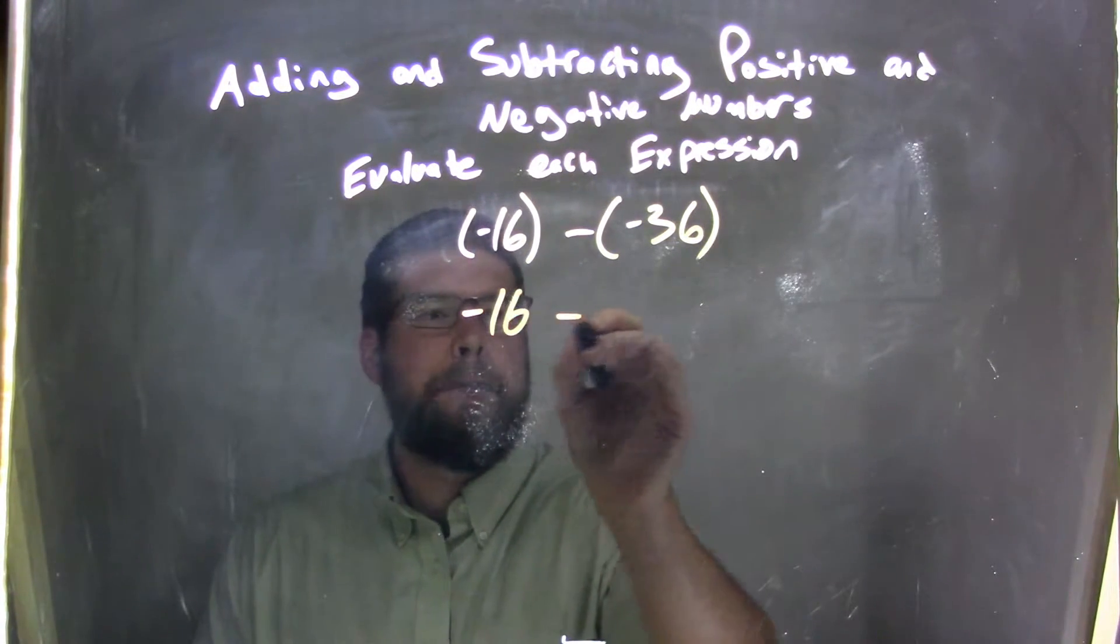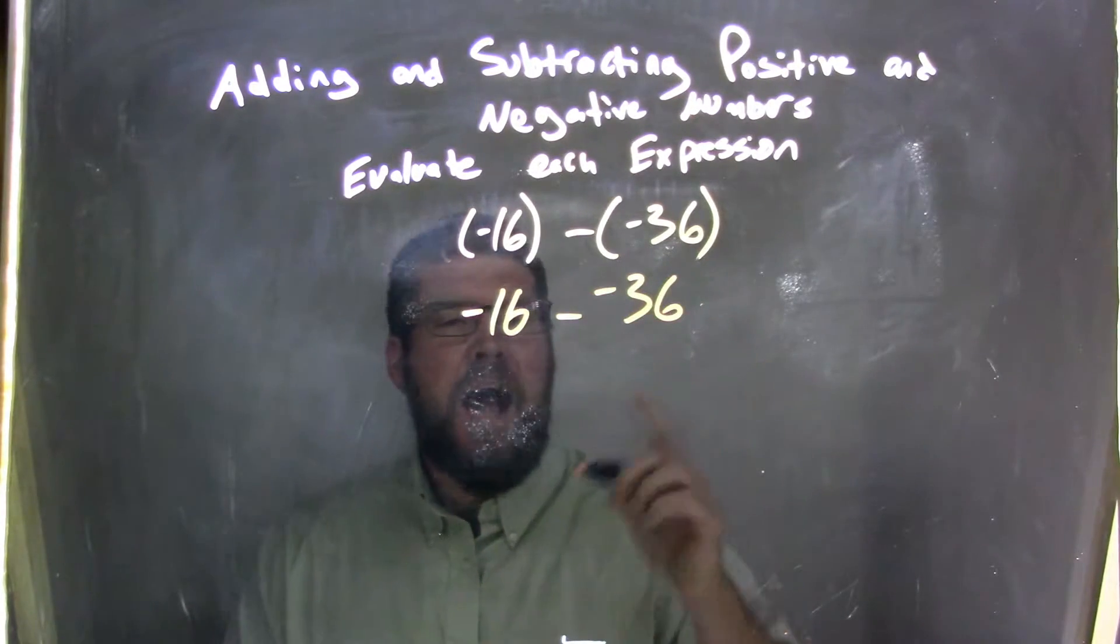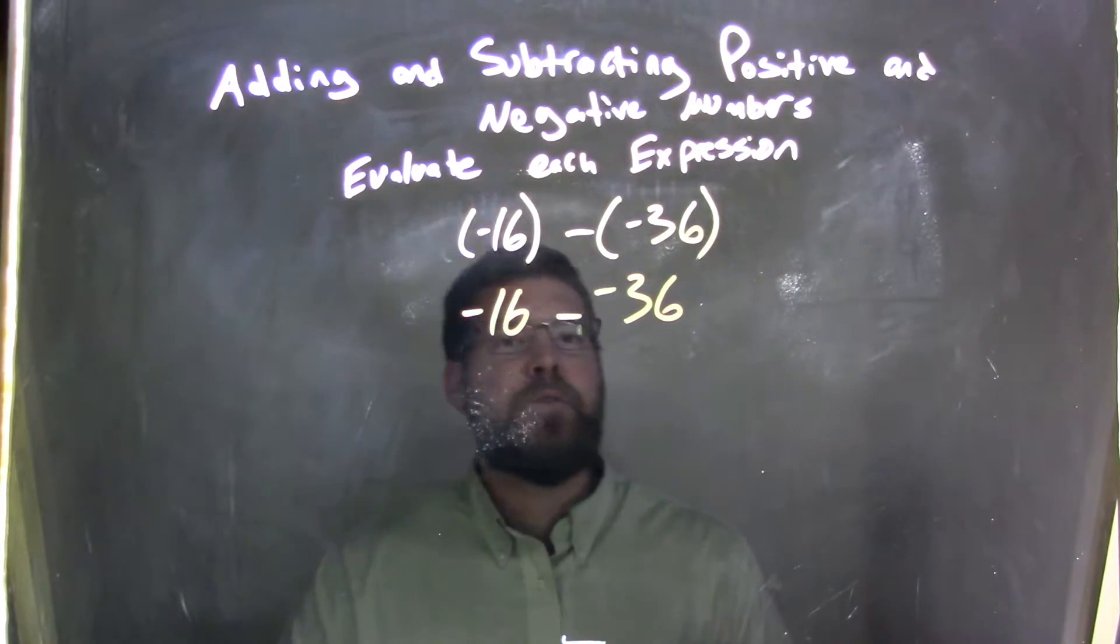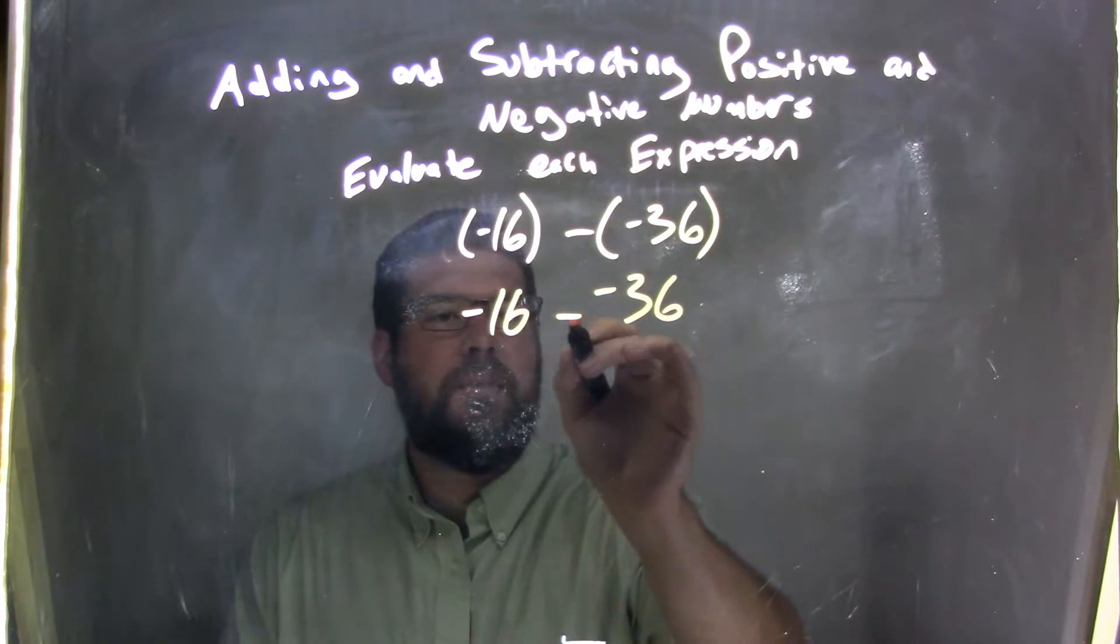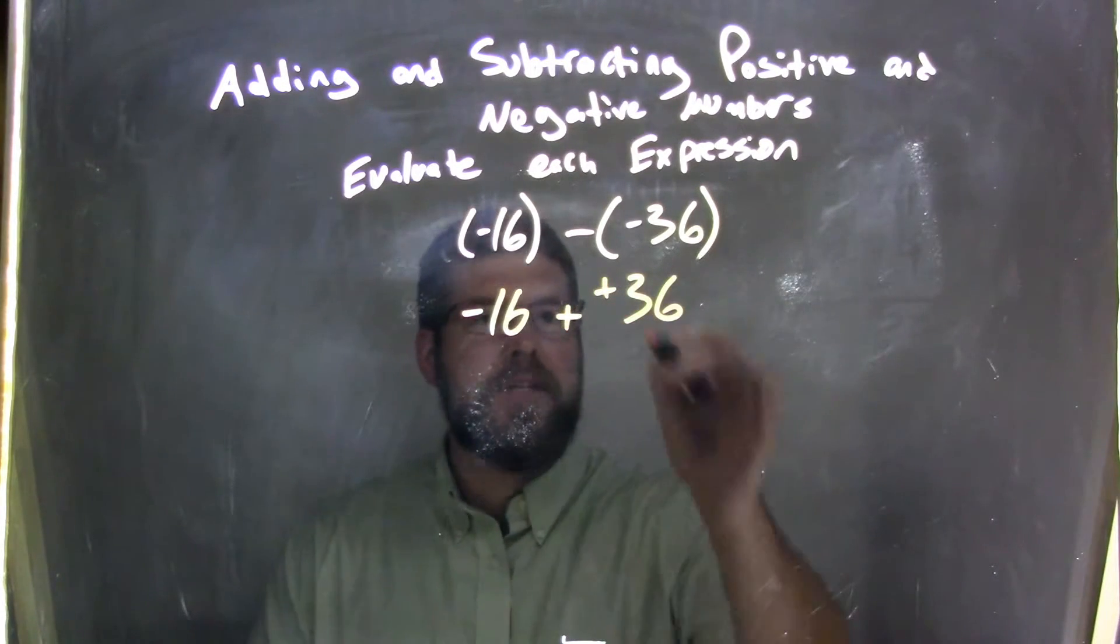Well, negative 16 minus a negative 36. I know that subtracting a negative is the same thing as adding a positive. So I have negative 16 plus a positive 36, right?